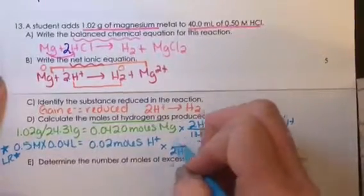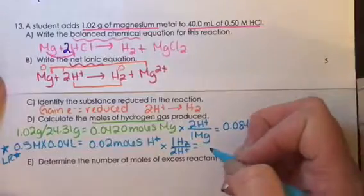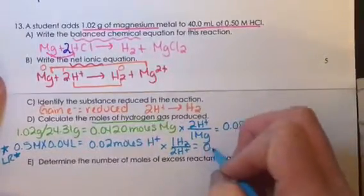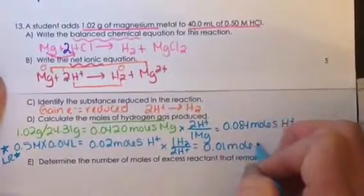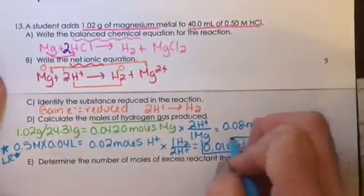For every two hydrogen ions, we make one mole of hydrogen gas, which means we are dividing it in half, and there would be 0.01 moles of hydrogen, which would be the answer to part D.